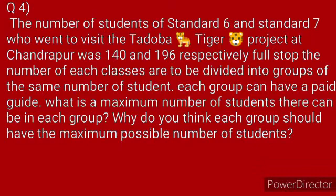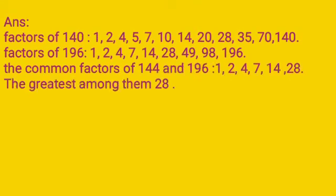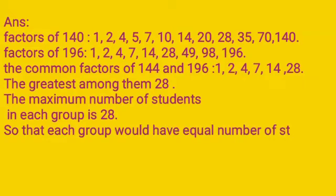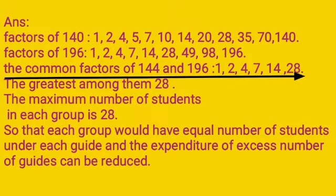Children, let us solve. Here, first we will find out the factors of 140 and 196. So, here are the factors of 140 and 196. We will find the common factors that is 1, 2, 4, 7, 14 and 28. The greatest among them is 28. The maximum number of students in each group is 28.